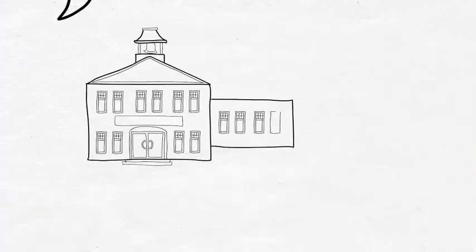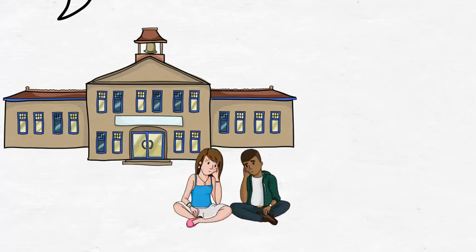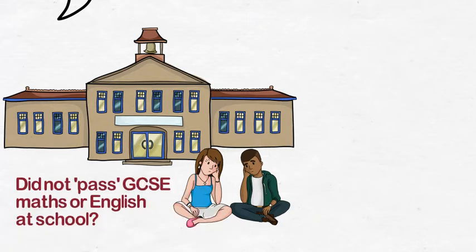From last September all students aged 16 to 19 who haven't achieved A* to C in English and/or Maths GCSE have to continue studying these subjects as a condition of funding.